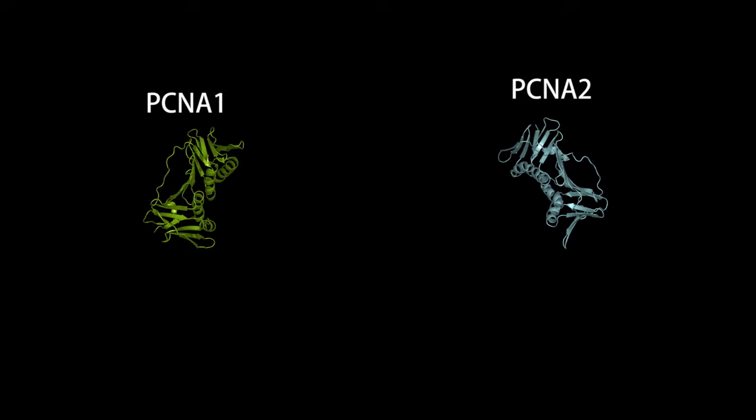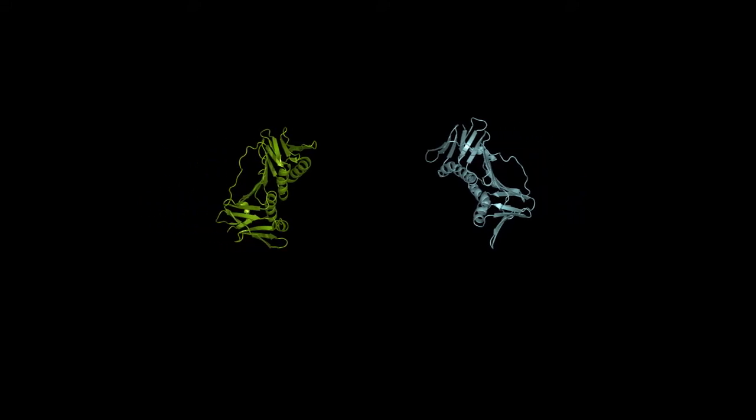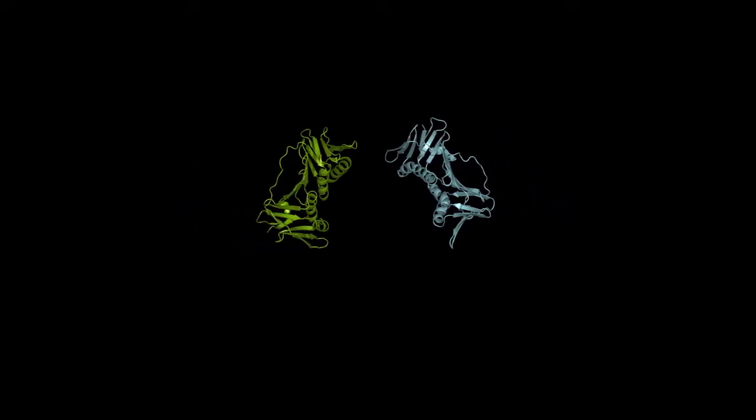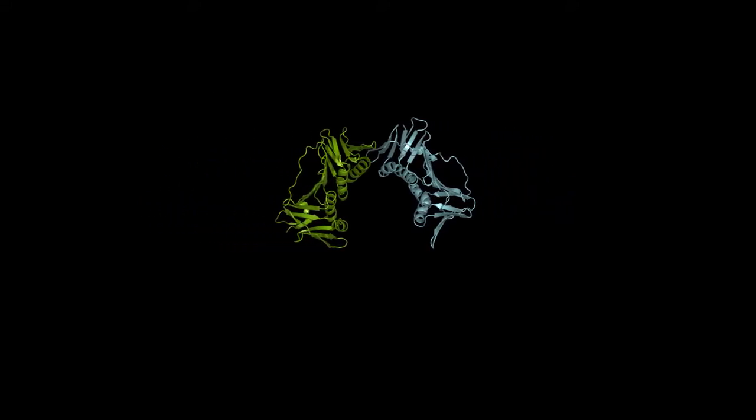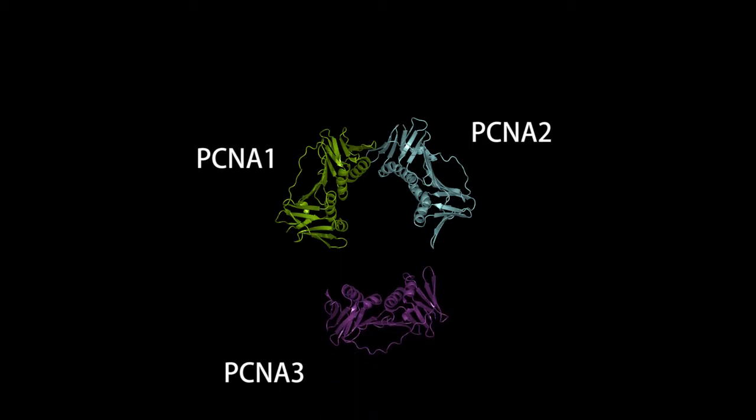The three PCNA subunits — PCNA1, PCNA2, and PCNA3 — can be separately expressed in E. coli, and the heterotrimer can be reconstituted in vitro by mixing the three subunits.